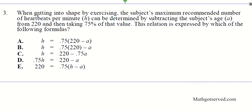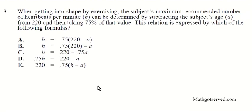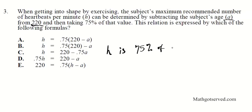Let's move on to question number 3. It says when getting into shape by exercising, the subject's maximum recommended heart rate can be determined by subtracting the person's age A from 220, then taking 75% of that value. This relation is expressed by which formula? So H, the person's heart rate in beats per minute, is 75% of A subtracted from 220.